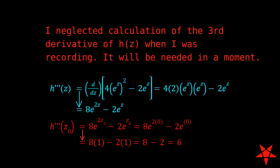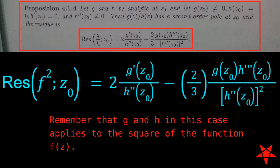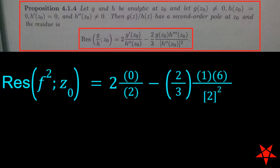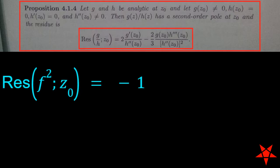The shoe fits, so we use the indicated formula on page 247, and enter in the values for the functions g and h along with their derivatives. This gives us negative 1 for the residue of f of z squared at z0.